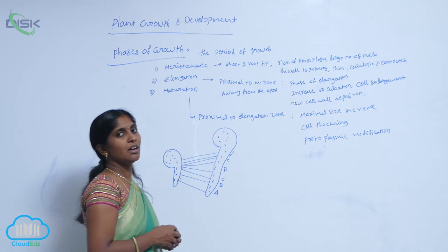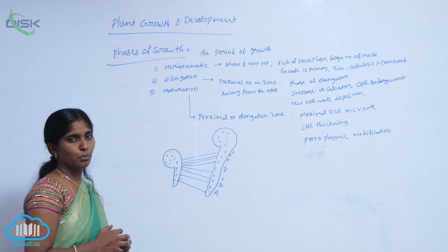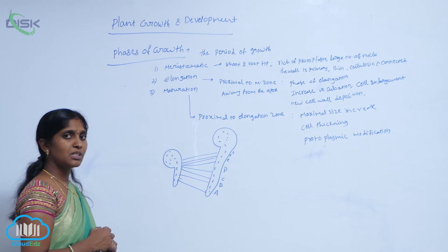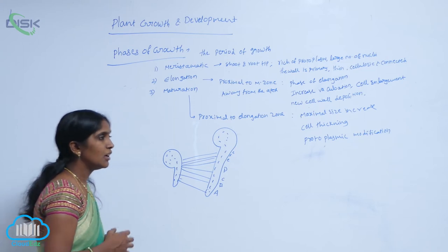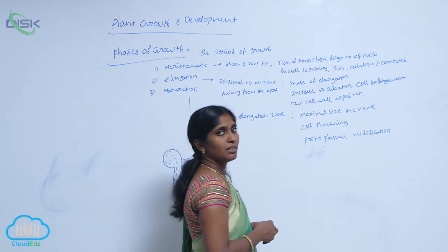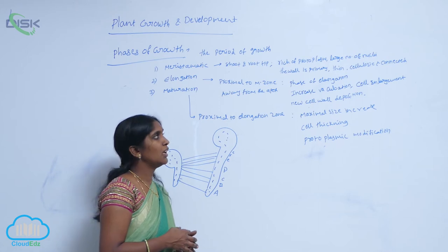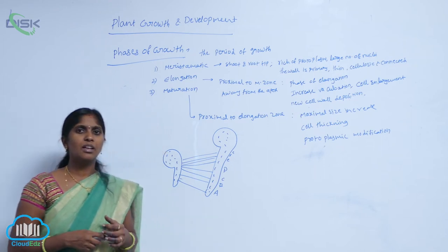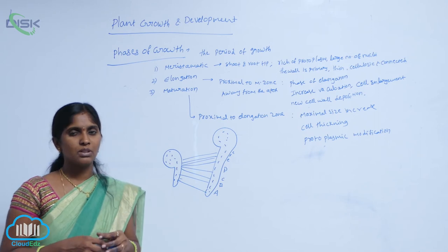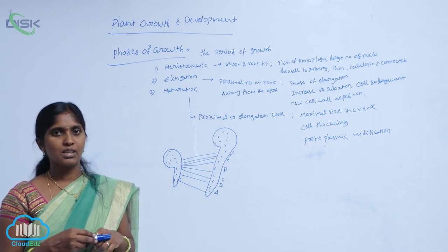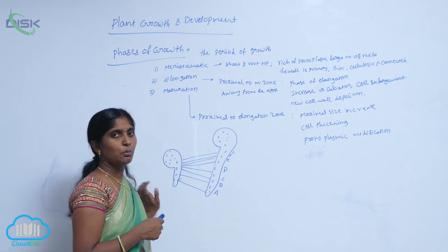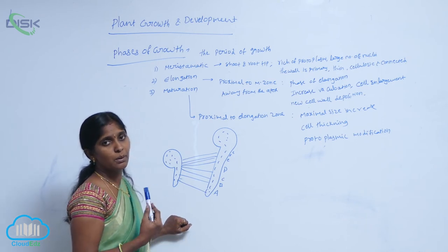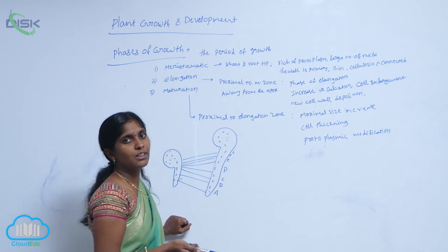The cells are rich in protoplasm and have prominent nuclei. The cells have primary, thin cell walls. The cell walls are cellulosic and they are connected with plasmodesmata. This means these are actively dividing cells — they are rich in protoplasm, have more nuclei, thin primary cell walls, and are cellulosic, connected with plasmodesmata.